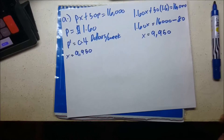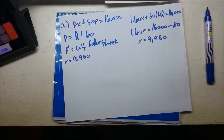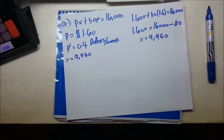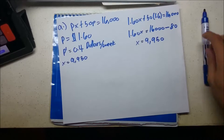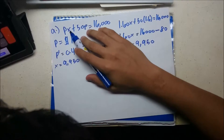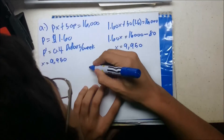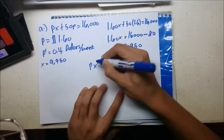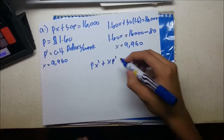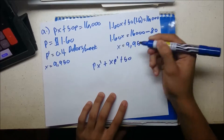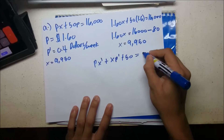The next thing we look for is what the question asked: find the rate of change in the demand. To get the rate of change in demand, we need to find x-prime. We differentiate the equation using the product rule, which gives Px-prime plus xP-prime plus 50 equals 0, since the derivative of 50P is just 50 and the derivative of 16,000 is 0.